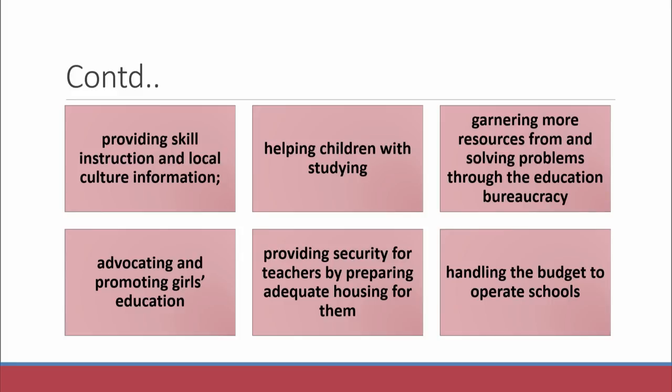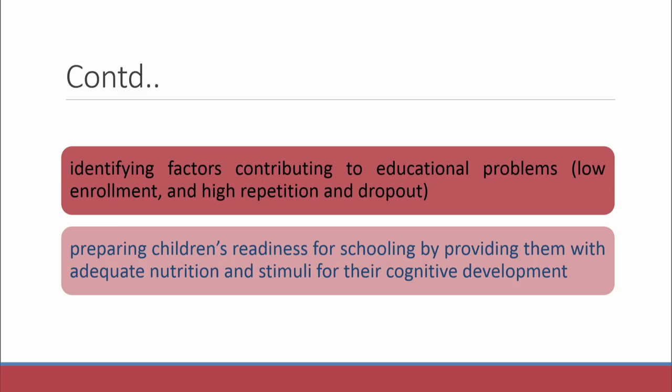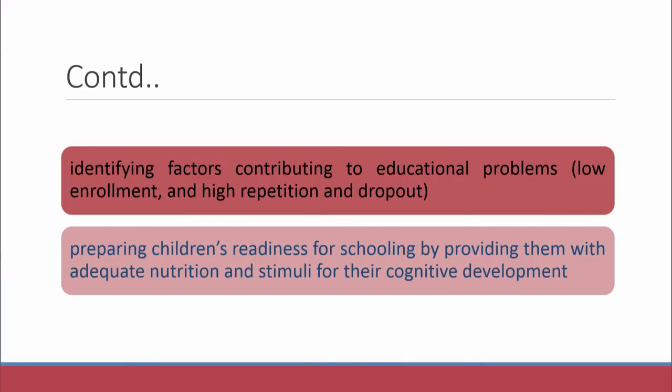Community members should handle the budget to operate the schools and should be apprised of the school's financial budget. By identifying factors contributing to educational problems — low enrollment, high repetition, and dropout — it is community members who can bring to notice the problems faced by parents whose children are studying in school: why enrollment is less, why students have to repeat classes, and what is the reason for dropout. These areas need to be discussed through adequate meetings arranged by school management committees. Communities should also prepare children's readiness for schooling by providing adequate nutrition and stimuli for cognitive development.